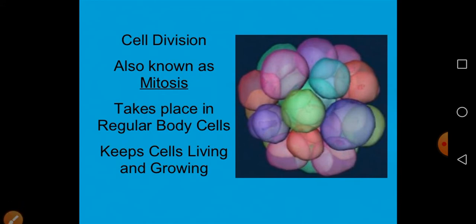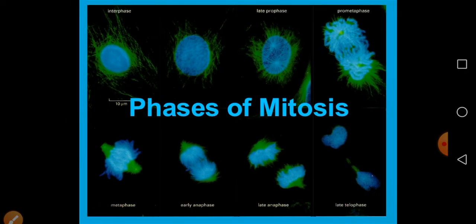Mitosis takes place in eukaryotic cells and is also called equational division because the chromosome number is maintained. The parent cell and daughter cells have an identical chromosome number. Mitosis is important for the growth of the organism and is a very important process for eukaryotic organisms.